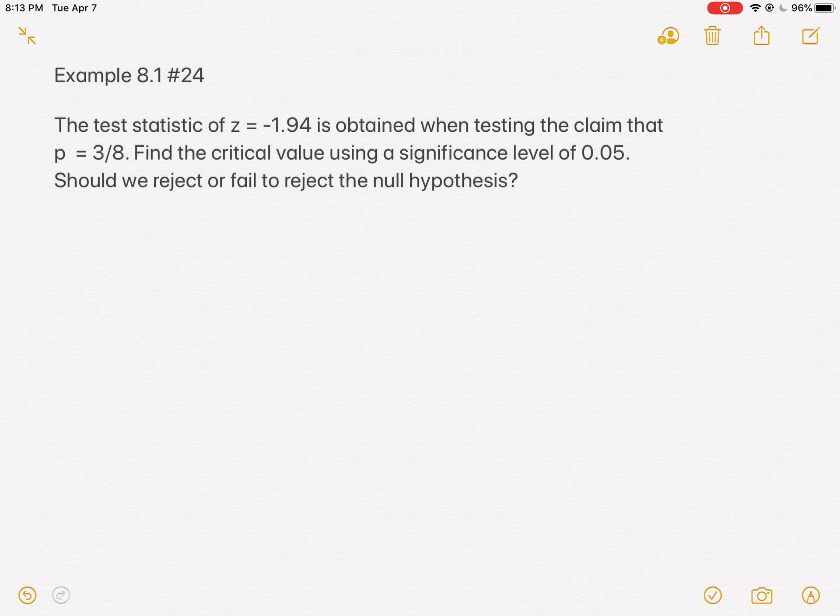Here we have a test statistic that's already been pre-calculated as negative 1.94 when testing a claim that P is equal to 3/8. They're asking us to find a critical value and use their given test statistic and our discovered critical value to decide whether we should reject or fail to reject the null hypothesis. So let's see what happens.